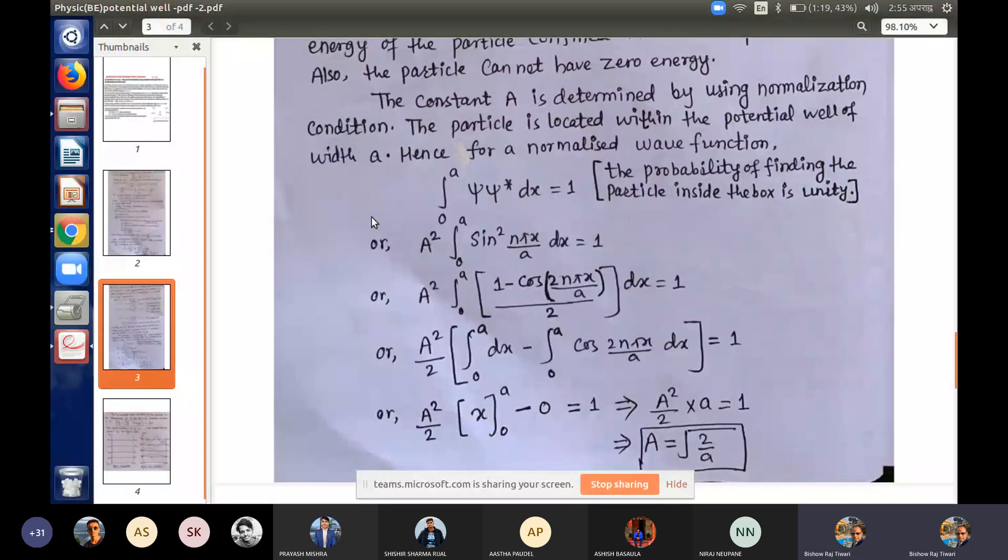Psi star equals psi. Then A squared sin squared n pi x upon A dx. If we have cos, we will use a formula, integral from 0 to a. If we have a mathematical integration, we can solve the mathematical details.